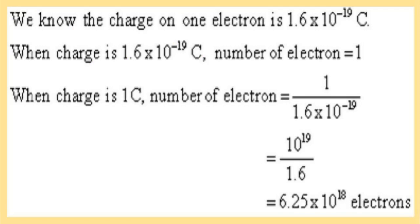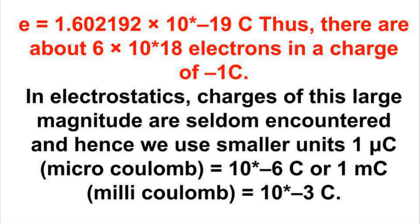The charge on one electron is 1.6 into 10 to the power of minus 19 coulomb. When the charge is 1.6 into 10 to the power of minus 19 coulomb, the number of electrons is equal to 1. When the charge is 1 coulomb, the number of electrons will be equal to 1 divided by 1.6 into 10 to the power of minus 19, which equals 6.25 into 10 to the power of 18 electrons.